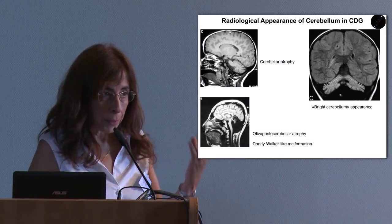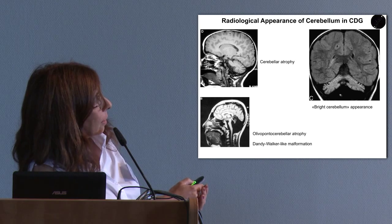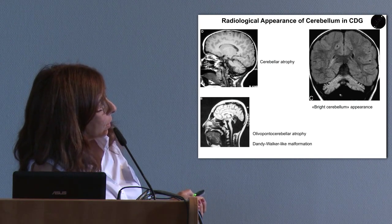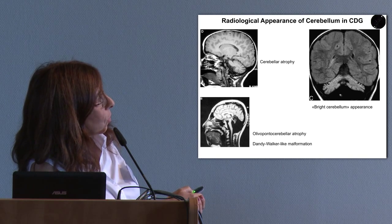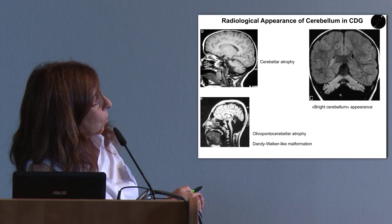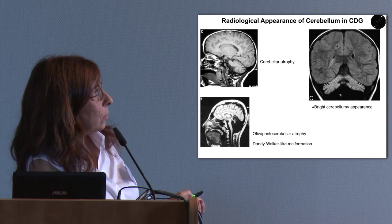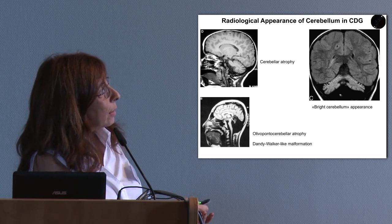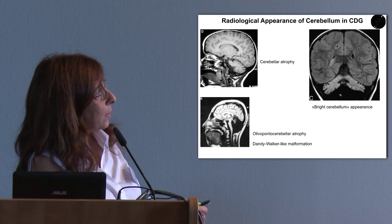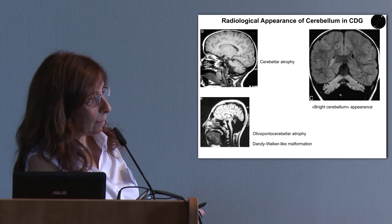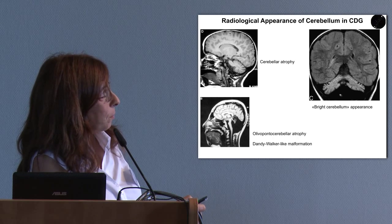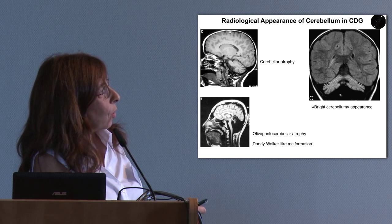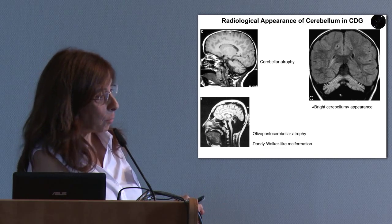The radiological appearance of the cerebellum in CDG includes cerebellar atrophy, but we can also see atrophy in other central nervous system structures — in particular in the so-called pontine bulge, a protuberance that reduces over time in some patients with CDG, usually the most severely affected. Another radiological feature is the so-called 'bright cerebellum,' because in some MRI images the cerebellar cortex appears bright and hyperintense.